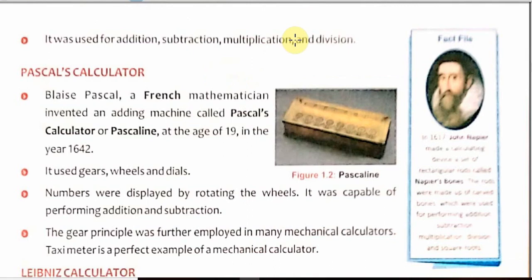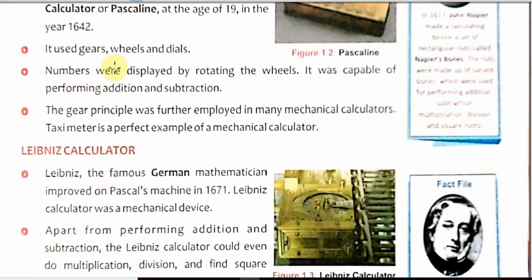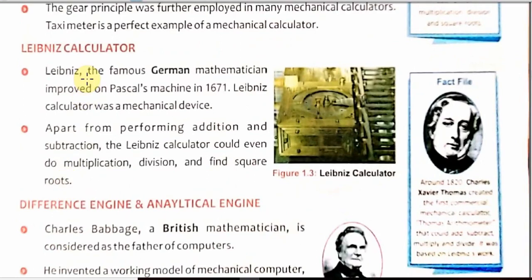The second machine in discussion was Pascal's calculator. Blaise Pascal, a French mathematician, invented an adding machine called the Pascal machine, Pascal calculator, or Pascaline, at the age of 19. This is the Pascal machine or Pascaline. It uses gears, dials and wheels — the gear is similar to what we use in automobiles. Numbers were displayed by rotating the wheel and it was capable of doing addition and subtraction. The gear principle was further applied in many mechanical calculators. The modern taxi meter is a perfect example of a mechanical calculator, and older electric meters in our homes also use gears.